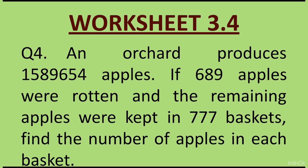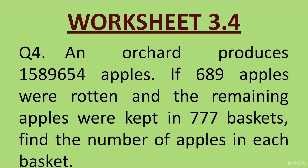Question 4: An orchard produces 1589654 apples. If 689 apples were rotten and the remaining apples were kept in 777 baskets, find the number of apples in each basket. In this question students, we have to first subtract the rotten apples from the total. The answer after subtraction will be the number of apples to be put in 777 baskets.